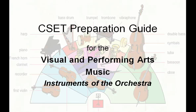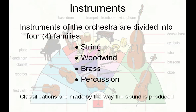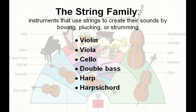Welcome to the Instruments of the Orchestra. Instruments of the Orchestra are divided into four families: the string, the woodwind, the brass, and the percussion. Classifications are made by the way the sound is produced.